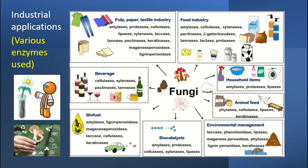Various enzymes can be produced which are largely used in different industries. For example, amylases, proteinases, proteases, lipases, and cellulases are common enzymes produced from fungi, which are used in pulp, paper, textile, and food industries, as well as for household items, animal feed, environmental management, biocatalysts, biofuel production, and beverages.